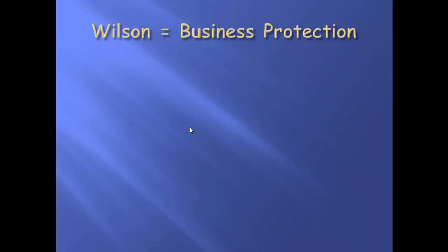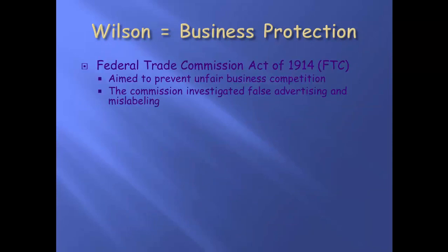What does Wilson do with business? He sets up the FTC — the Federal Trade Commission — and it is still around today. It investigated businesses that were engaging in unfair practices. It basically told those companies: if you're doing something wrong, we're going to fine you, hunt you down, and impose sanctions. The Commission investigated false advertising and mislabeling. So if you buy a product today in America, the label is absolutely correct because the federal government is watching.